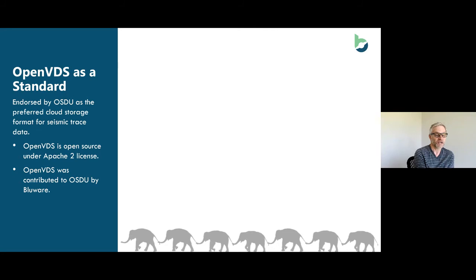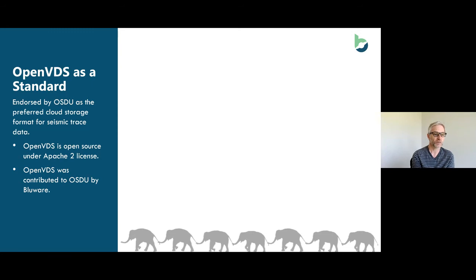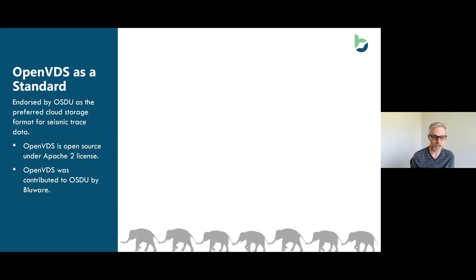OpenVDS has been endorsed by the OSDU — the Open Subsurface Data Universe — as the preferred cloud storage format for seismic trace data. It is an open-source format available under the Apache 2 license, meaning the file definition is available to anyone with no lock-in to a proprietary format. It was contributed to the OSDU just over two years ago by Blueware and forms part of the R2 release of OSDU, which is almost complete at this point.